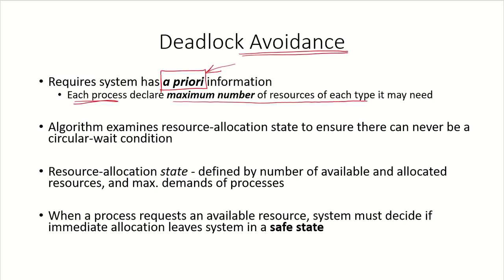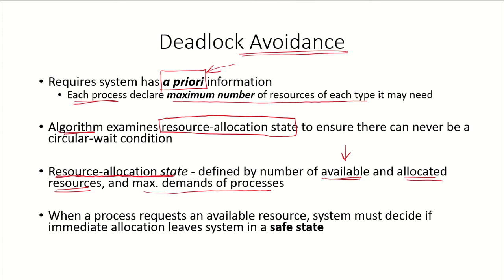Any time a process requests for a resource, the algorithm will examine the resource allocation state to ensure whether there would be a condition for deadlock or not. The resource allocation state is defined by the number of available resources in the system, the allocated resources currently allocated to processes, and the maximum demands of processes. Whenever a process requests for an available resource, the system must decide if this allocation will leave the system in a safe state or lead it to an unsafe state.